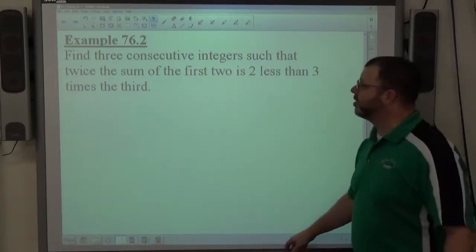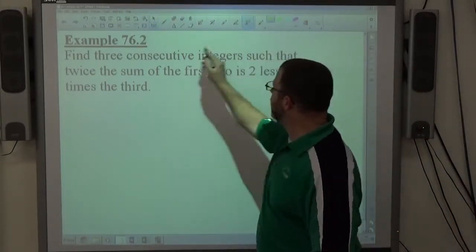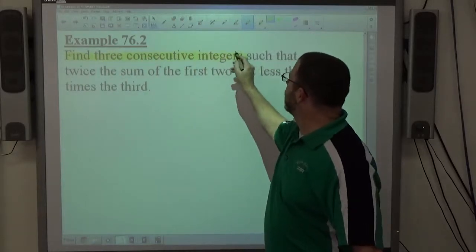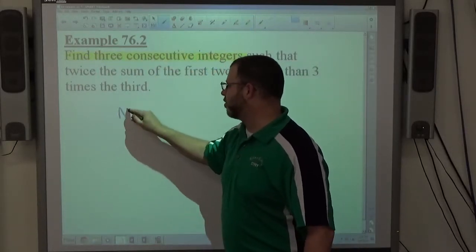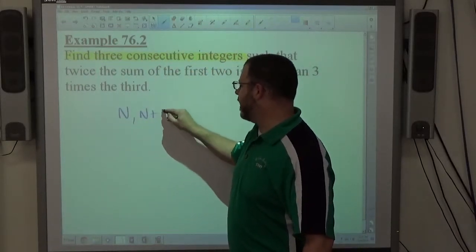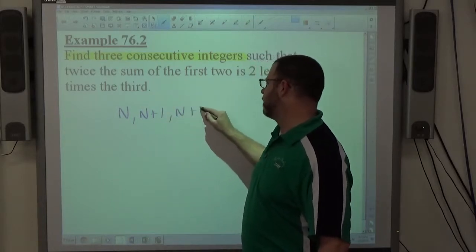Example 2, find 3 consecutive integers. So once again, it says to find 3. So the 3 consecutive integers will be first one n, add 1 to n we get n plus 1, third one n plus 2.